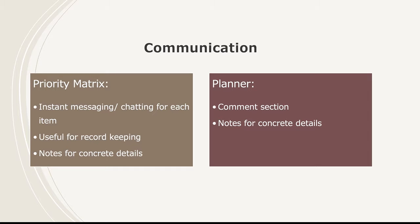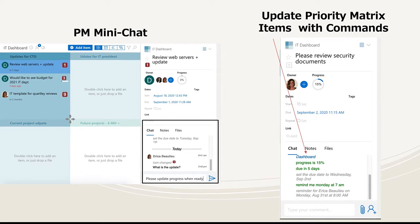Another key feature users who are evaluating Priority Matrix and Planner typically look at is how they can actually communicate in the application, cutting back on the amount of internal emails. Priority Matrix and Planner both provide a space to add notes for more concrete details for every single item. These two apps are different when it comes to actually chatting with your team. Priority Matrix supports a mini-chat for each item, so you can have a fluent conversation by directly messaging your teammates. By using commands in the chat section, you can quickly update your task as well.